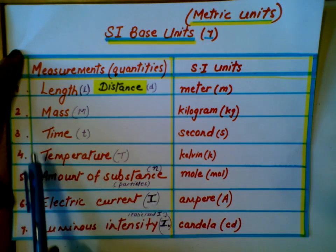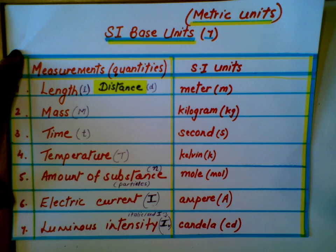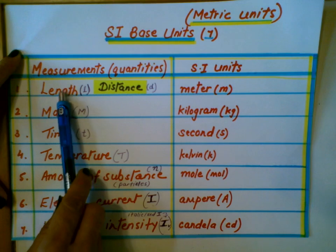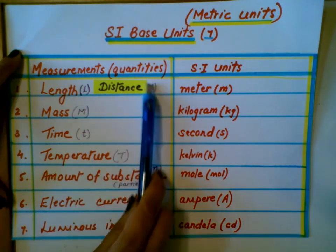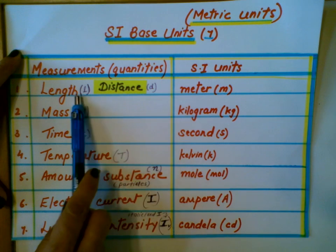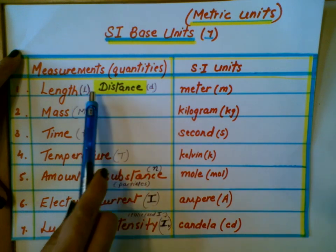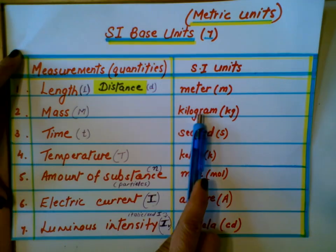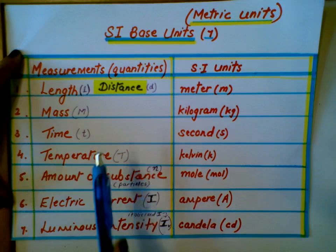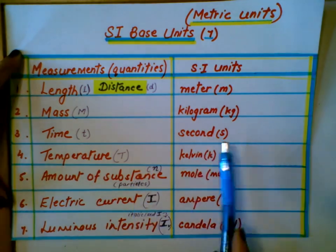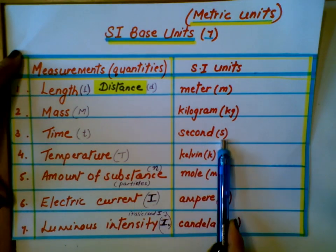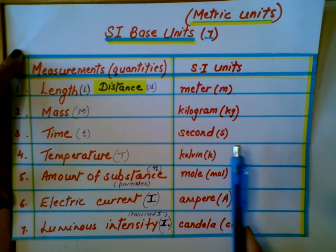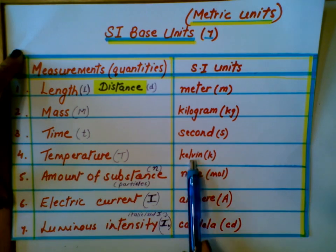One through seven: meter for length. Distance would be the more technical term because you can switch it for width, height, distance, and any other linear measurement. Kilogram is for mass. Time is measured in seconds—the same second used in the English system of units. Temperature is measured in Kelvin.